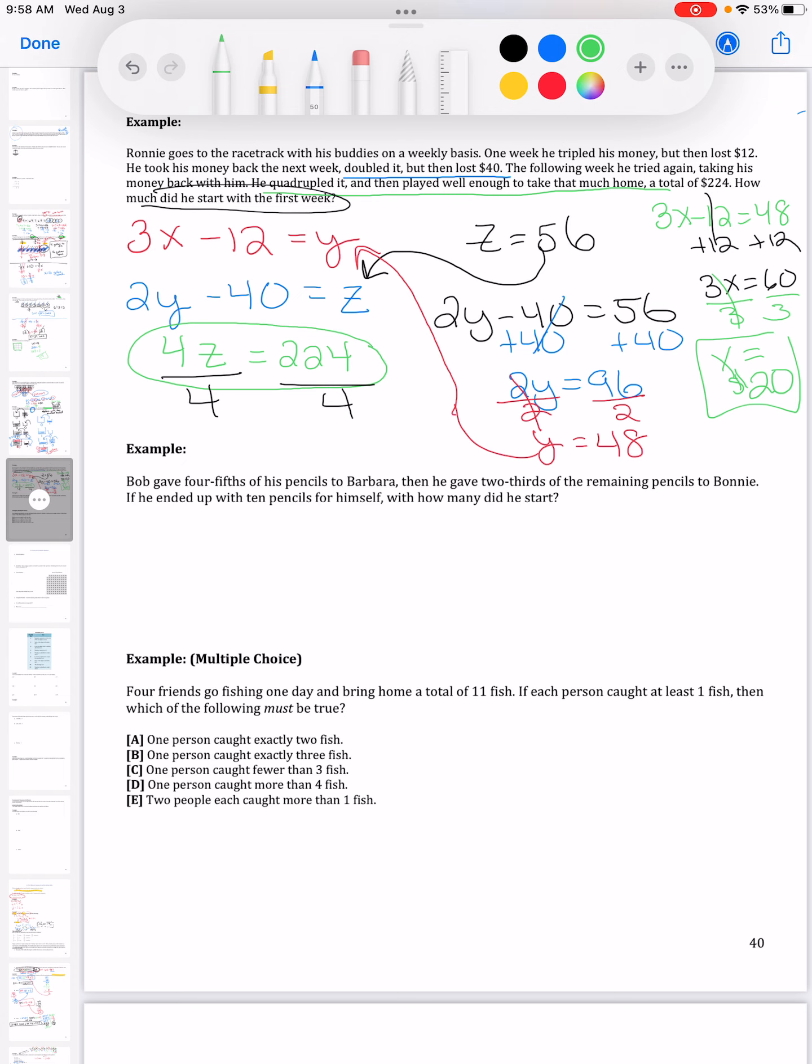So I'm going to get 3x equals 60 divided by 3. So my last step would be the 60 divided by 3 to give me 20 dollars.